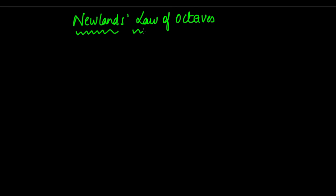So Newlands — John Newlands — was a chemist, an English chemist, a British chemist, who was fascinated and really interested in finding a method to be able to group elements. So he came up with the Law of Octaves. Now, the word 'octave' is basically a group of eight.